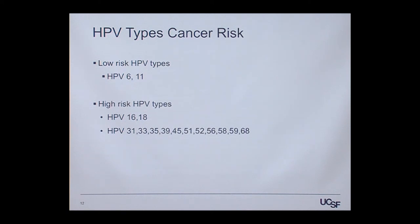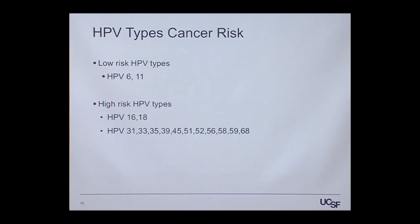For genital HPV types, the most common are divided by whether they appear in cancers. Low-risk types 6 and 11 are associated with warts and are hardly ever found in cancer. Types 16 and 18 are the most common types found in cancer and are more likely to persist, avoid the immune response, and progress to cancer. There are also other types with intermediate but definite potential to develop into cancer.